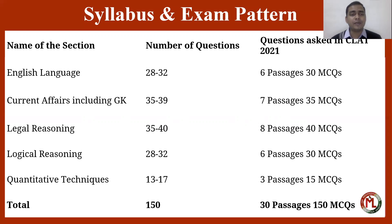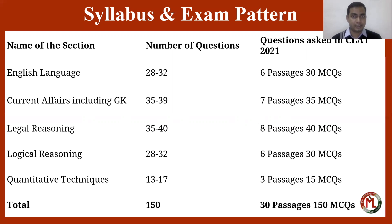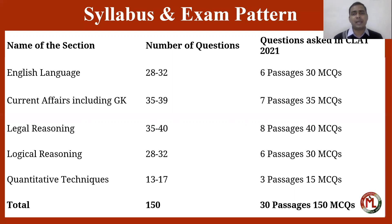The five subjects are: English Language, Current Affairs and GK, Legal Reasoning (that is legal aptitude), Logical Reasoning which includes analytical and critical reasoning as well, and Quantitative Techniques or Quantitative Aptitude. They have revamped their examination — earlier there were conventional type questions, but now they have introduced passage-based questions from 2020 onwards.